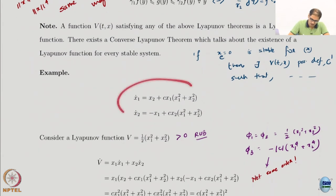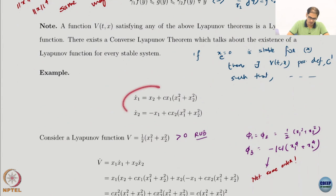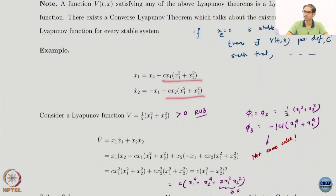Here we have a second-order system. Without the additional terms it is just a harmonic oscillator — it just goes in circles, so it is just stable, not asymptotically doing anything. Let us see what happens because of the addition of these terms.